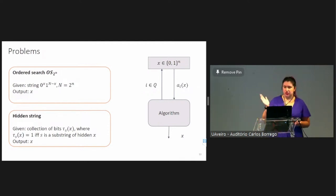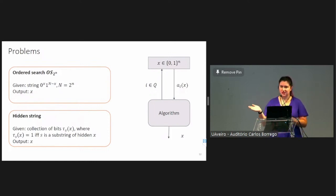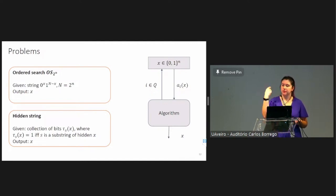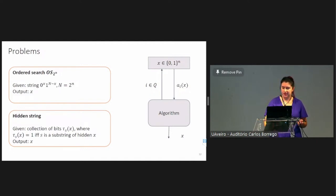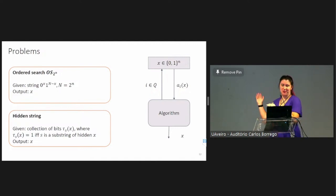In general, we can generalize these kinds of problems as follows: we have an algorithm with Oracle access to the input, the goal is to figure out what the hidden string is, and the algorithm is allowed to make queries from a fixed set of queries. Each time it makes a query, the Oracle evaluates the corresponding function on the hidden string and sends the result to the algorithm. These kinds of problems are called Oracle identification problems, and that's the main reason why I'm talking about this right now.